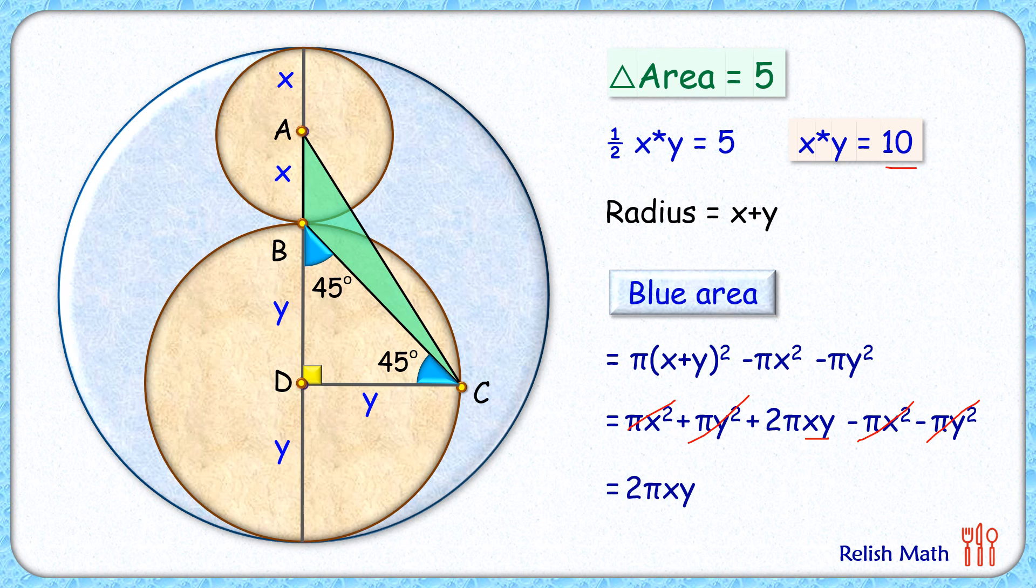So putting this value we'll get area of blue circle as 20 pi cm square and that's our answer. I hope you enjoyed the solution, I will see you in next video till then tata bye bye.